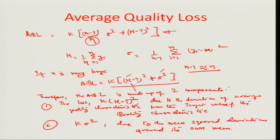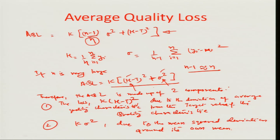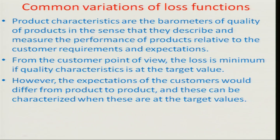One contribution reflects how much the average value of the characteristic is deflected or deviated from the target value, and the other is basically the mean square error from the actual quality characteristic to the mean quality characteristic. These two components equally contribute to build up the average quality loss. The common variations of the loss functions are quite essential for running a business from a customer point of view.